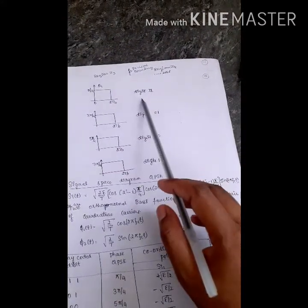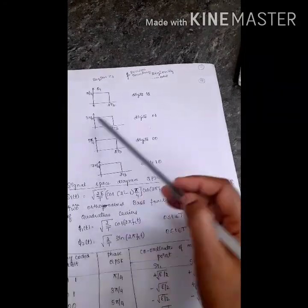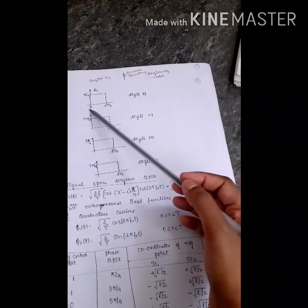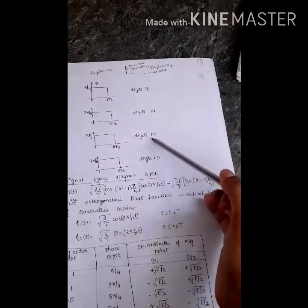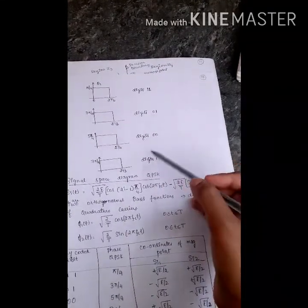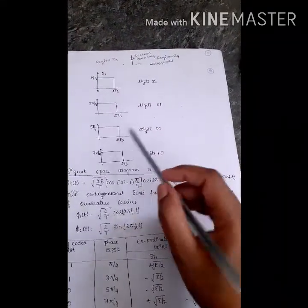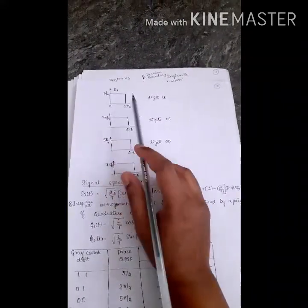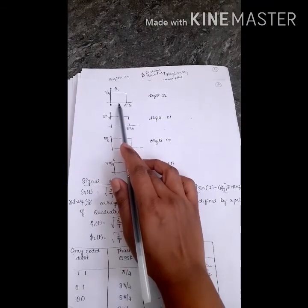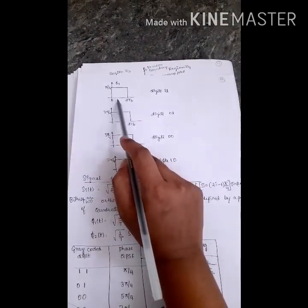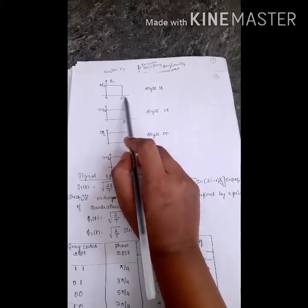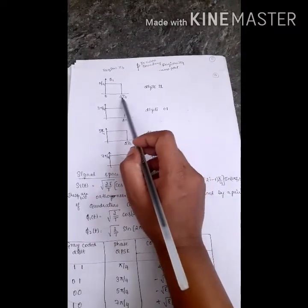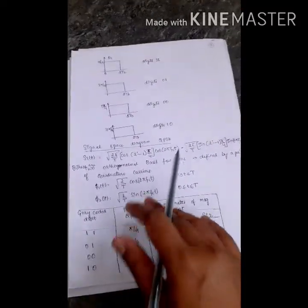For the dibit 11, the phase value is pi by four. For dibit 01, the phase value is three pi by four. For dibit 00, the phase value is five pi by four. For dibit 10, the phase value is seven pi by four. We are considering two Tb (bit durations), so the symbol duration is 2*Tb.